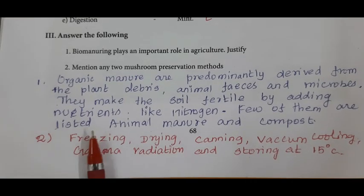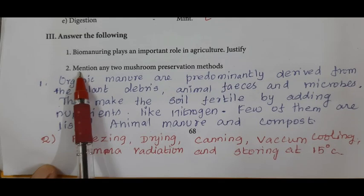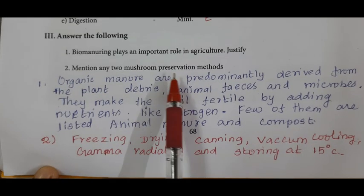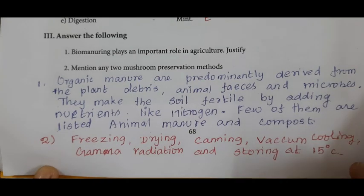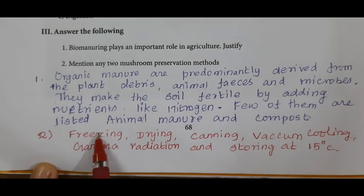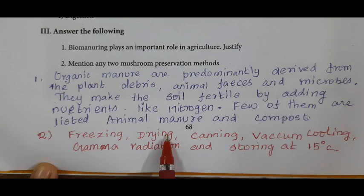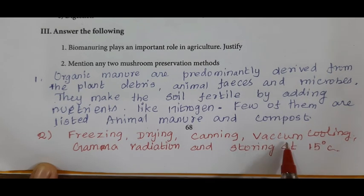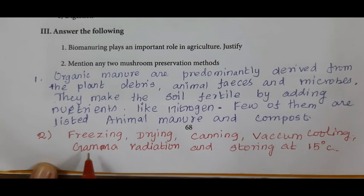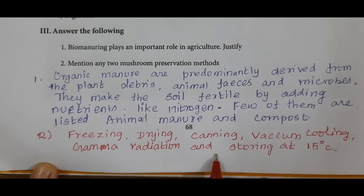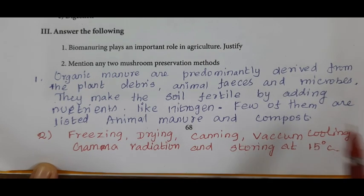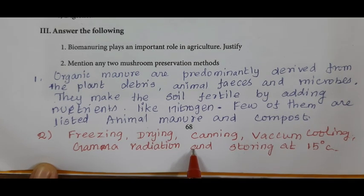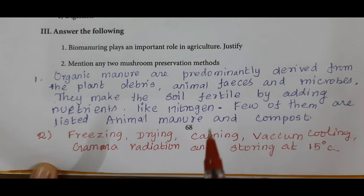Second question: mention any two mushroom preservation methods. The mushroom preservation methods are: freezing method, drying, canning, vacuum cooling, gamma radiation, and storing at 15 degrees Celsius. Under these preservation methods, the mushrooms are preserved.